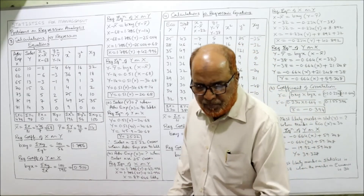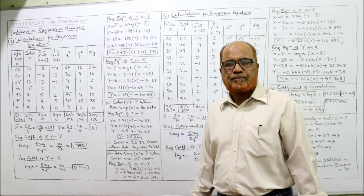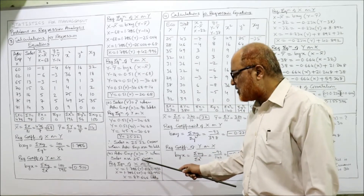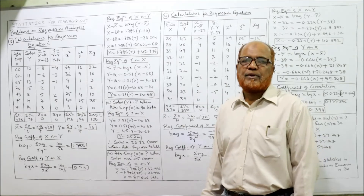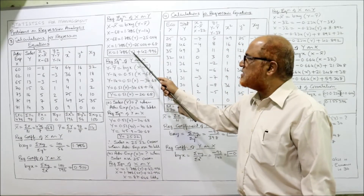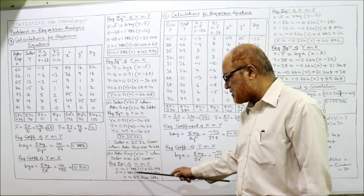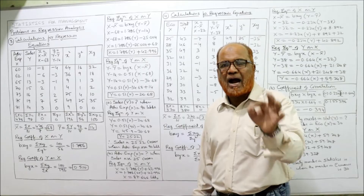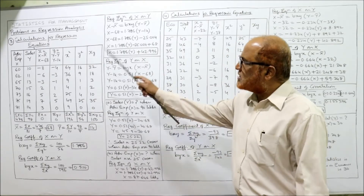Part B: find the advertising expenditure when the sales target is 25 crore. Here Y is given as 25 and X is to be found. To find X, we apply the regression equation X on Y: X equals 1.786Y plus 42.996. Substituting Y equals 25: 25 times 1.786 equals 44.65; 44.65 plus 42.996 equals 87.646. So the advertising expenditure required is 87.646 lakhs to achieve a sales target of 25 crore. Problem 3 is complete.